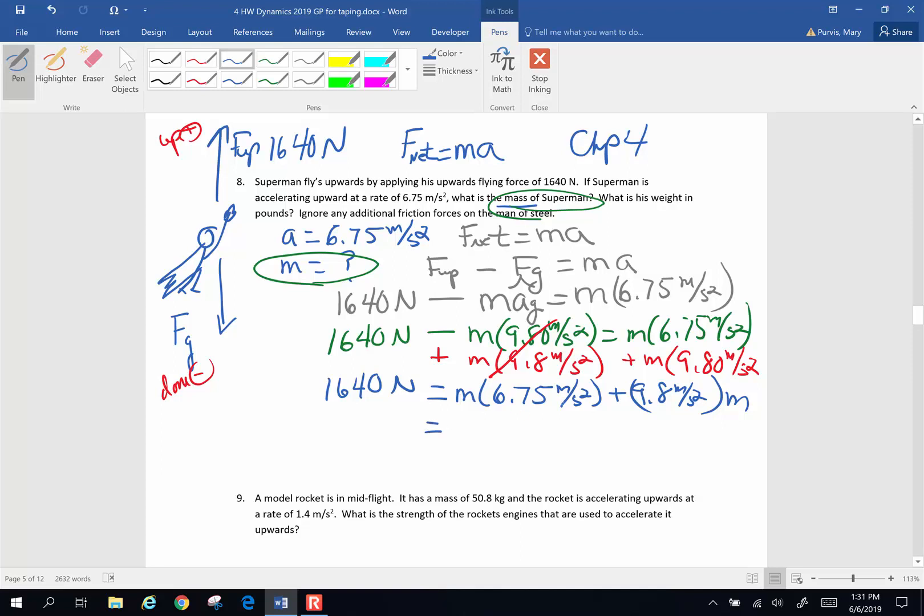I can add them because this is a subtraction. To get this on this side, I am going to add mass times 9.8 meters per second squared to both sides. If I do that to one side and I do it to the other, here's what's going to occur. These two are going to cancel, and I'm going to end up with 1640 newtons is going to be equal to this plus this, which is going to be mass of 6.75 meters per second squared plus 9.8 meters per second squared times mass. So combine like terms, 6.75 plus 9.8, I'm going to end up with mass times 16.6 when I round it to 3 sig figs. 1640 newtons, or mass I'm going to divide both sides by 16.6. So 1640 divided by 16.6, mass I get 98.8 kilograms. That's what I get for the mass of Superman.